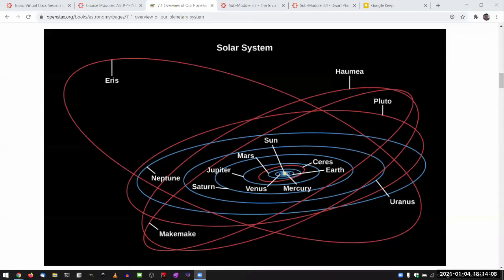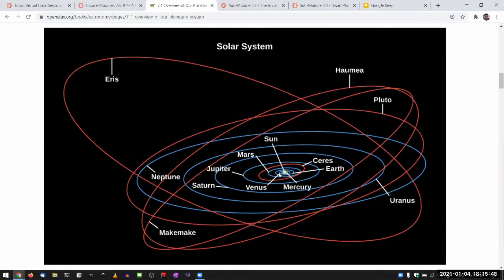You can see the sun there. I'm not sure if it's drawn to scale, but there's the sun. And you see the orbit of the four terrestrial planets. Mercury, barely visible, almost looks like part of the sun, and orbit of Venus.